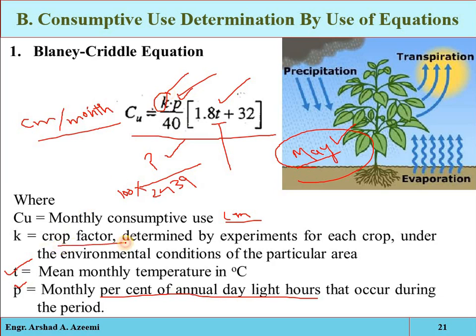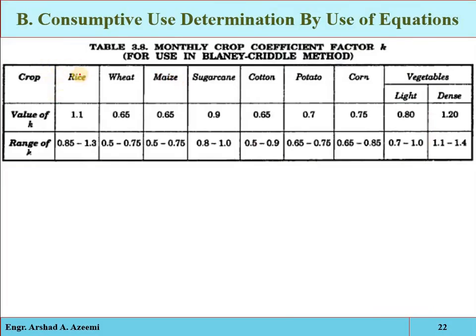K is the crop factor. Consumptive use is different for different crops at different areas, so K is variable for different crops and is determined experimentally. Standard values of K for common crops — rice, wheat, maize, sugarcane, etc. — are already available. We can use these average values, but ideally K should be determined experimentally for the given area and specific crop. If not available, standard average values can be used.